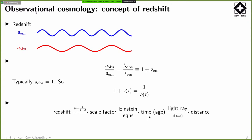The scale factor can be related to the time or age of the universe using general relativity, Einstein's equations, and what is known as the Friedmann equations. If we know A as a function of t, we get an idea about the time of the universe. Since we're mostly talking about light rays, the time immediately tells you the distance to the object. So redshift acts as a proxy for both the age of the universe and the distance to an object.